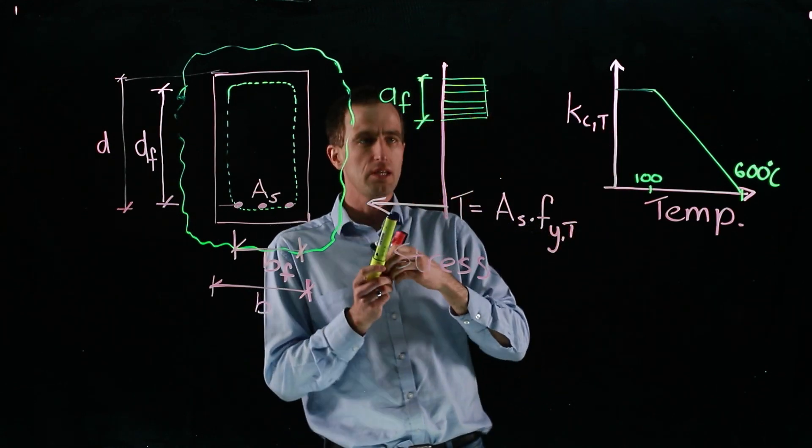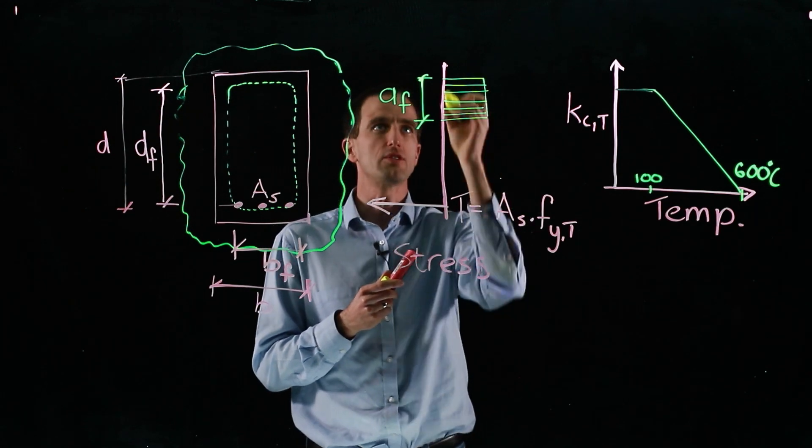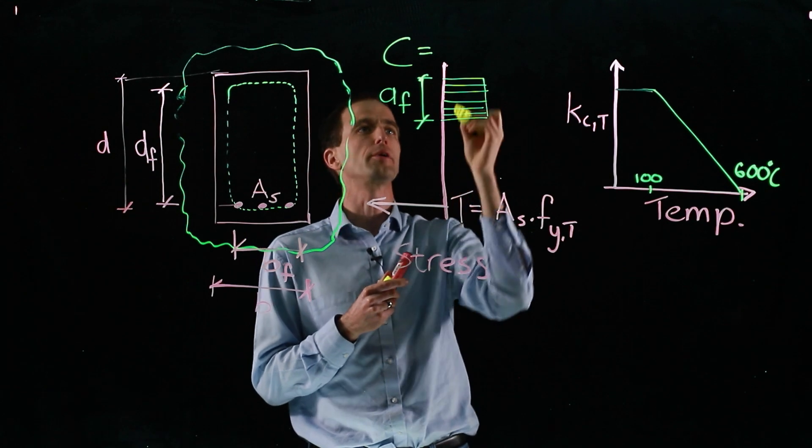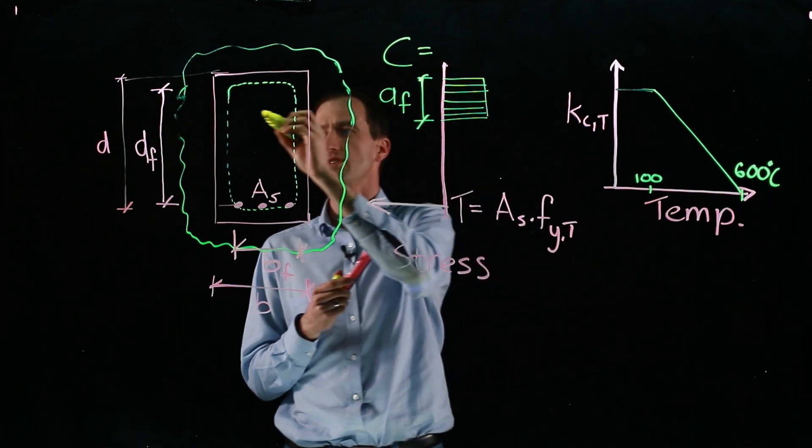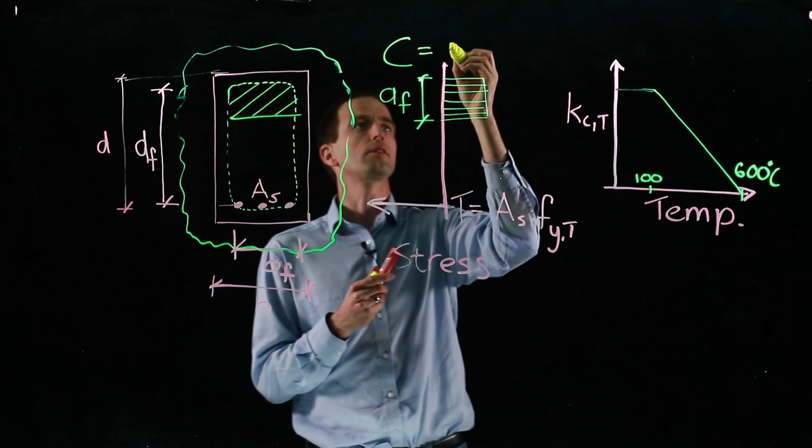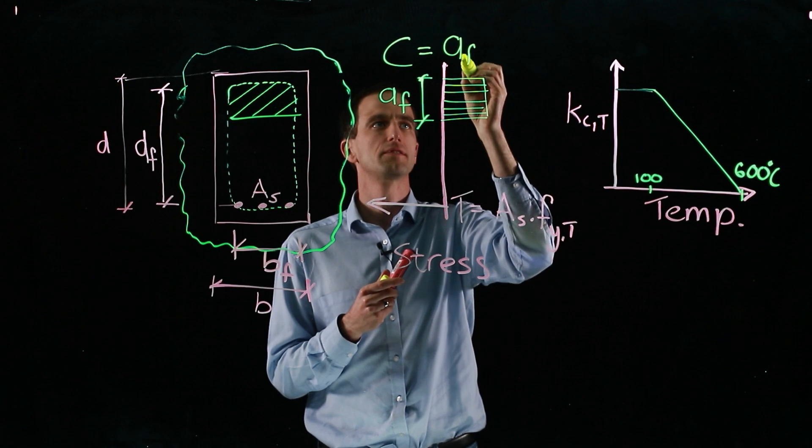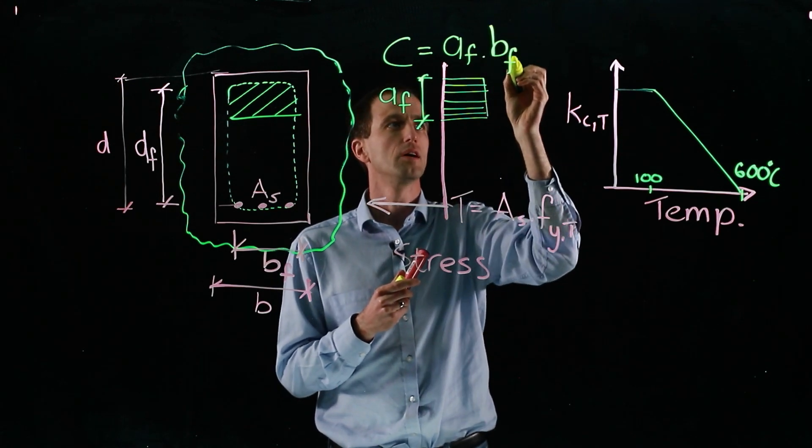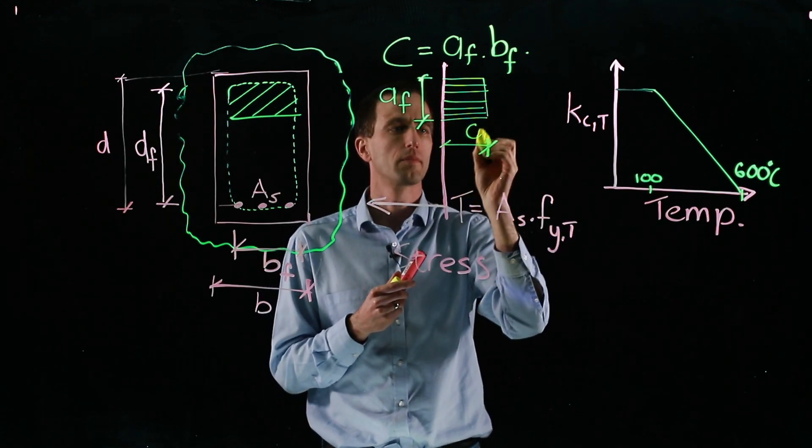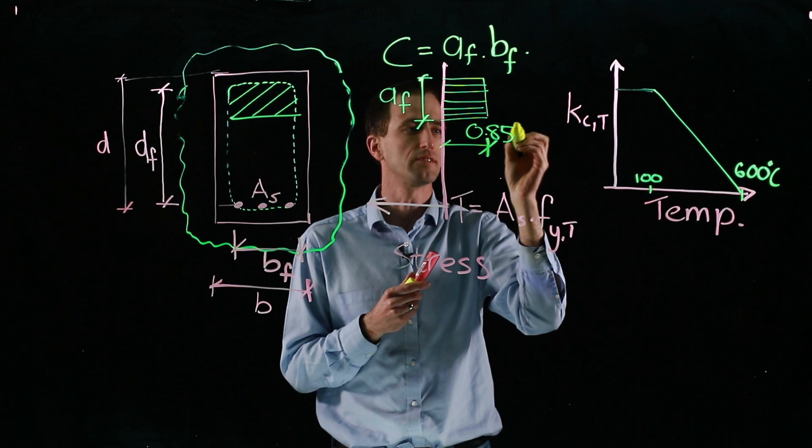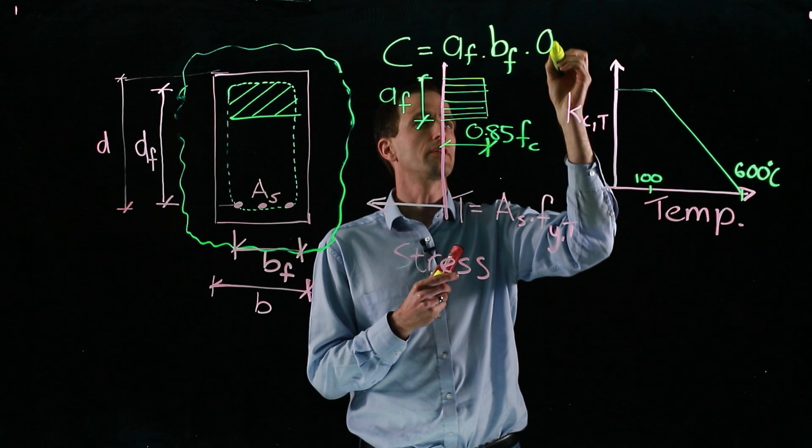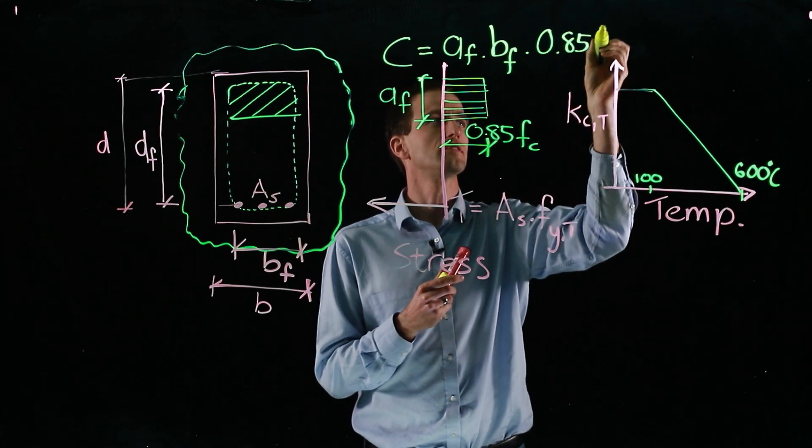And now we need to get the compression force in the top compression block, that's C. This is the area of our concrete in compression. That will be AF, our height, times BF, our width, times 0.85 of our cylinder strength FC. We use that 0.85 FC.